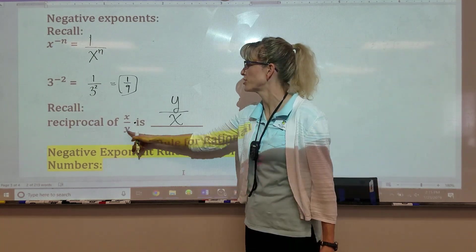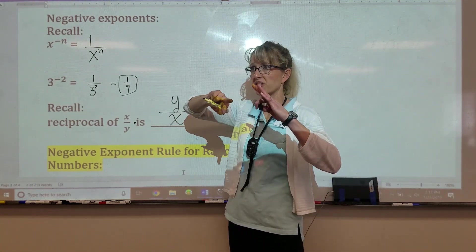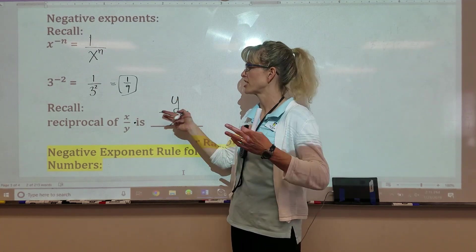so it would be x over y times y over x would equal 1. Perfect. That is a very mathematical way to describe it. What would turn it into 1? You would have to flip it upside down. Right?